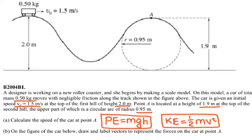So I wrote for you the formula for potential energy and kinetic energy. I'm going to calculate potential and kinetic energy at the top of the first hill. The potential energy equals mgh: mass is 0.5, g is 10, and h is 2, which gives me 10 joules.